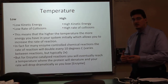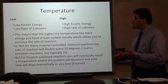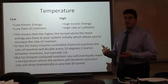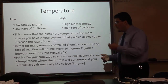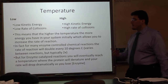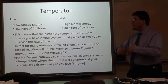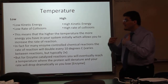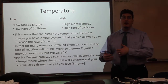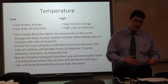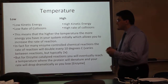A lower temperature gives a decreased rate of reaction overall. For many enzyme-controlled chemical reactions, the rate of reaction will double every 10 degrees Celsius. This is variable between reactions, but typically it will double — sometimes triple, sometimes 1.5 — but the typical value is double.